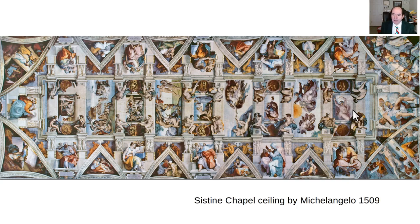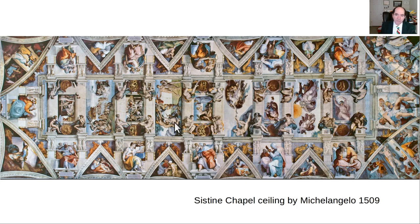You've got God separating the darkness from the light, creating the waters and the land. Then he's got the creation of man with Adam. Then he creates Eve. Then Adam and Eve fall to temptation and are cast out of Eden. Then there are a couple things about Noah — the drunkenness of Noah.